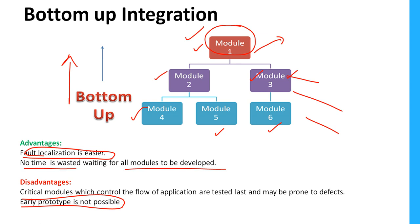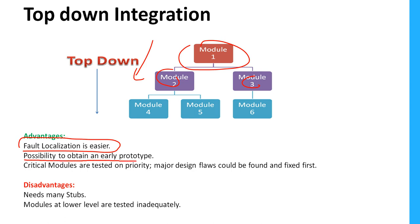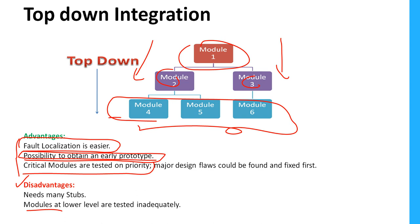In the top-down approach, testing starts from the main module down to sub-modules. Advantages: fault localization is easier, early prototypes are possible, critical modules are tested on priority, and major design flaws can be found and fixed first. Disadvantages: many stubs are needed since sub-modules are not yet implemented, and modules at the lower level are tested inadequately — there is no structured methodology for testing the lowest-level modules.